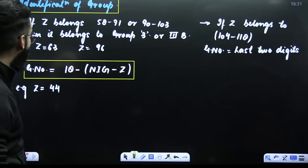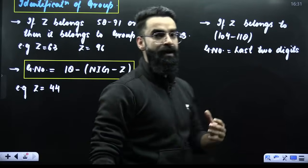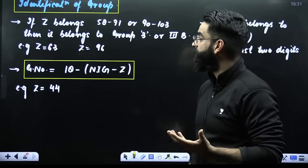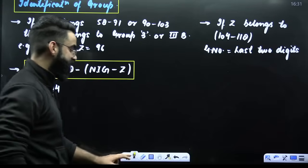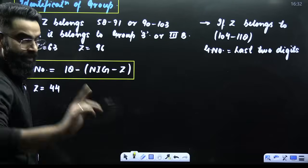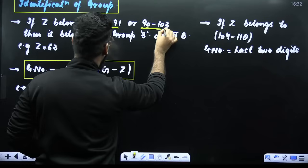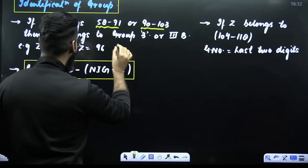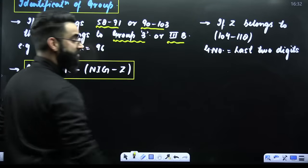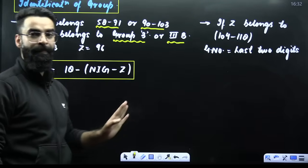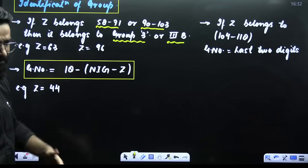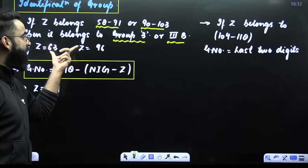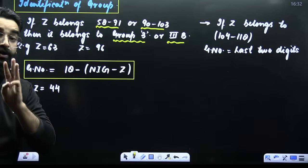Now, one last thing — identification of the group when atomic number is given. Three simple rules: First, if atomic number belongs to 58–71 or 90–103, these are F block elements — lanthanoids and actinoids — and they belong to group 3 (also called 3B in Mendeleev's periodic table). For example, atomic number 63 and 96 are F block elements and directly belong to the 3rd group.